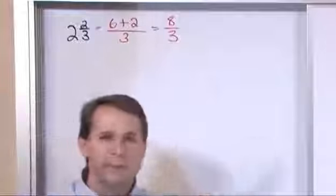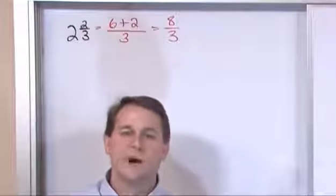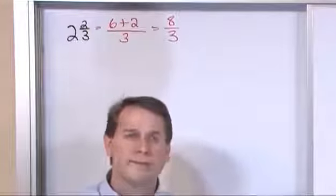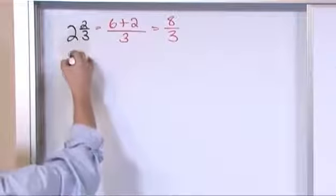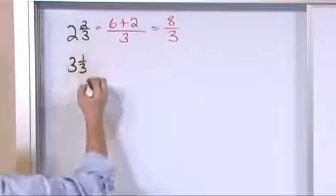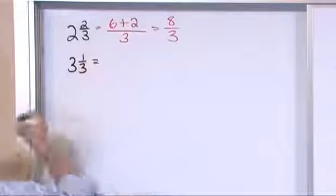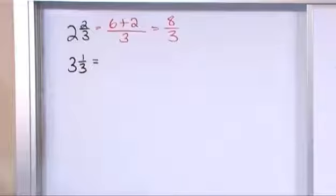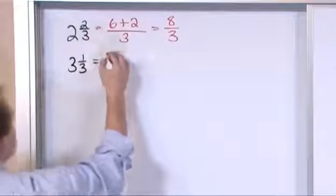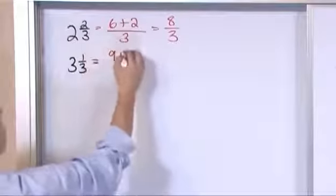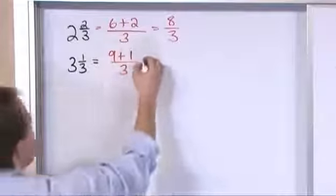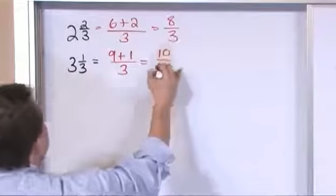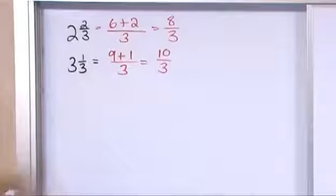Some teachers don't like you to keep answers as improper fractions, so you need to learn how to convert back and forth. What if we have three and a third? You always start at the bottom: three times three is nine, plus the one from the numerator, over the same denominator. So you get ten thirds, and that's the answer.